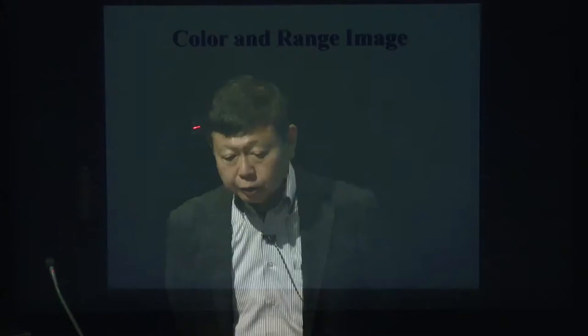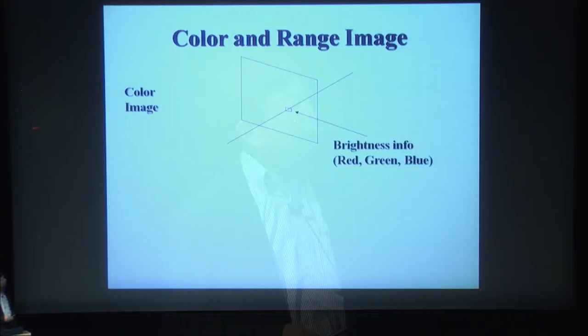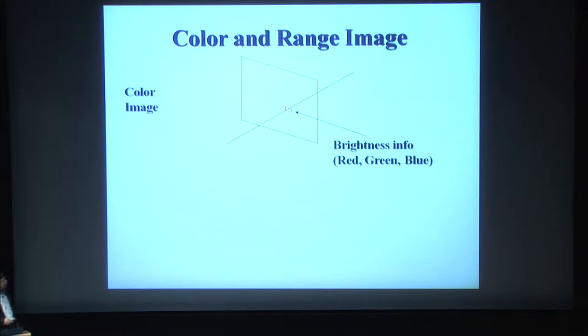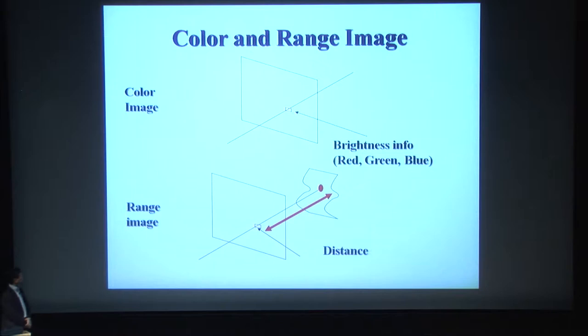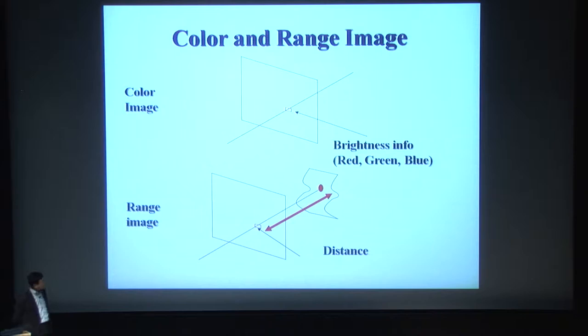We obtain two classes of data: color data and range data. Color data stores red, green, and blue values at each position — a color image is a 2D array of RGB values. Range data stores the physical distance between sensor and object at each position. We obtain color images using a digital camera. However, range images require a range sensor. At each pixel we know the distance, so we can rotate and see the depth of each part.